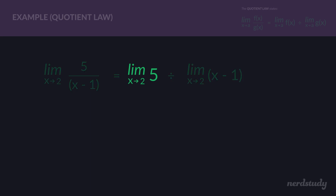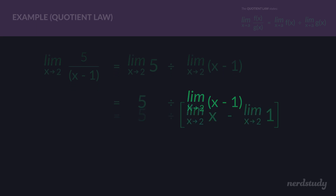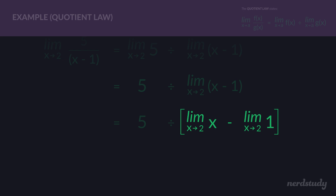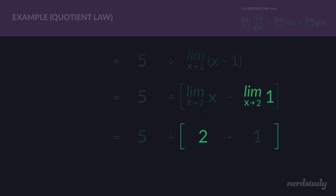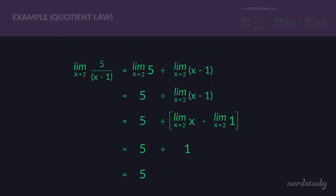The limit as x approaches 2 for 5 is just 5. For the denominator, the limit as x approaches 2 for x minus 1, we use the difference law: limit of x minus limit of 1, both with x approaching 2. The limit of x is 2, and the limit of the constant 1 is 1. So 2 minus 1 equals 1. That gives us 5 divided by 1, which equals 5. So the limit as x approaches 2 for y equals 5 over x minus 1 is 5.